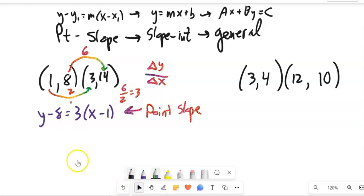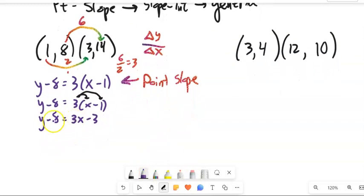Now I'm going to manipulate this to get it into slope-intercept form. The first thing I'm going to do is distribute that 3 into there. So I've still got y minus 8. 3 times x is 3x. 3 times negative 1 is negative 3. We're almost there. We want to get y alone, so I'm going to add 8 to both sides. I get y equals 3x plus 5. Great, I'm in slope-intercept form.